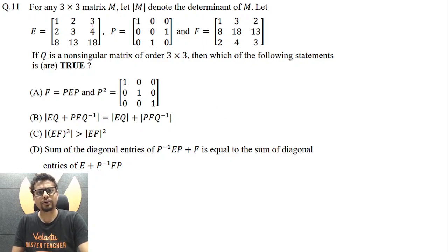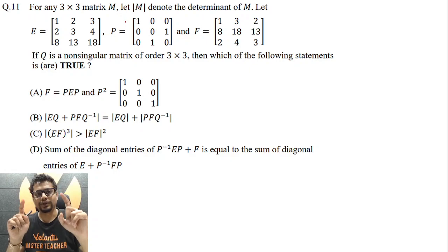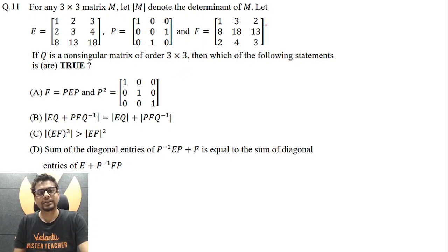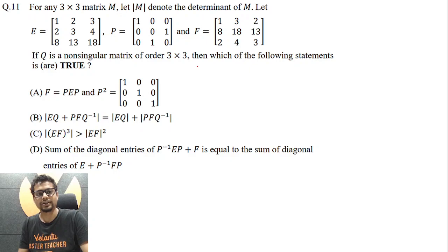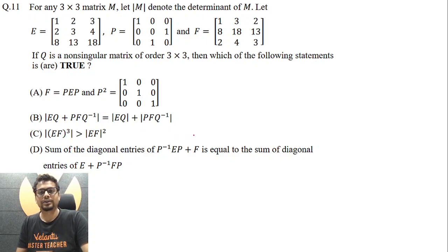For any 3×3 matrix M, let |M| denote the determinant of M. Let E be this matrix, P be this matrix, F be this matrix. If Q is a non-singular matrix of order 3×3 — that means determinant of Q is not 0 — then which of the following statements is or are true? There are four options. It is a multiple choice multiple correct type question.